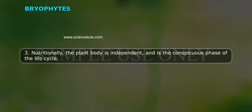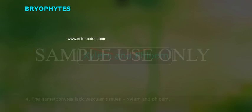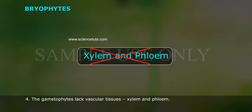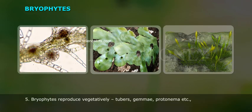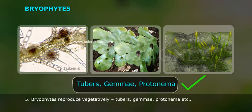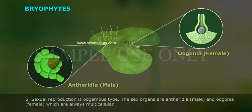Rhizoids are organs of absorption and fixation. 3. Nutritionally, the plant body is independent and is the conspicuous phase of the life cycle. 4. The gametophytes lack vascular tissues — xylem and phloem. 5. Bryophytes reproduce vegetatively by tubers, gemmae, protonema, etc.